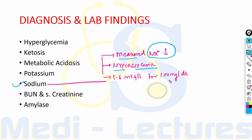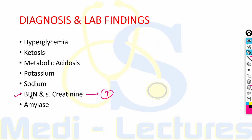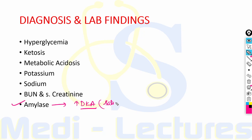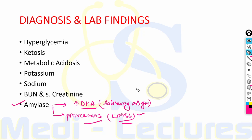Measured serum sodium is usually decreased due to hyperglycemia — for every 100 mg/dL increase in blood glucose, there is a 1.6 mEq/L decrease in serum sodium. If serum sodium is normal in a DKA patient, it suggests severe dehydration. Blood urea nitrogen and serum creatinine are increased due to intravascular volume depletion. Serum amylase can be increased in DKA but is of salivary origin; to rule out pancreatitis, lipase is a better investigation.